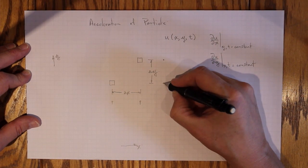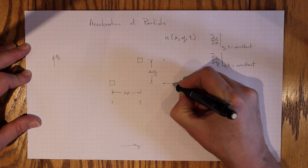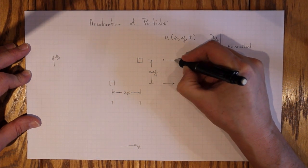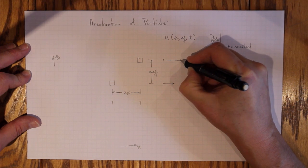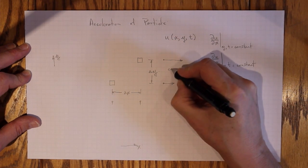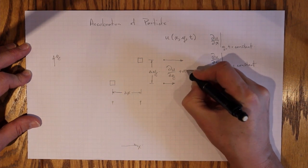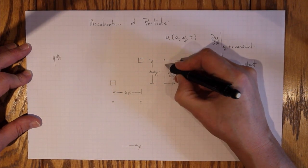So if u down here was like this, and u up here was like that, then that would have ∂u/∂y positive at a given time.